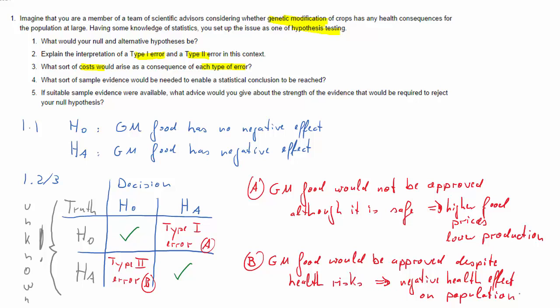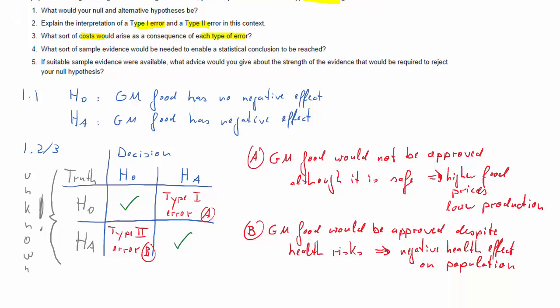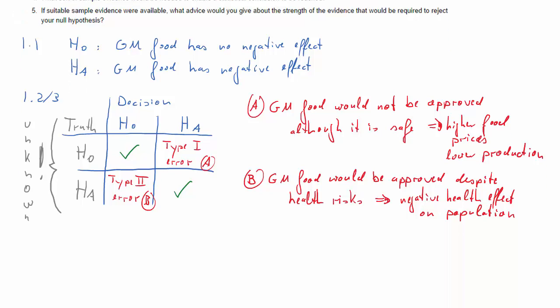When you do hypothesis testing, you need to be aware of these two types of errors, and you need to keep in mind that it's only the probability of one of these errors which you can control, and that's the probability that you make a Type I error conditional on H0 being the truth.